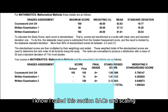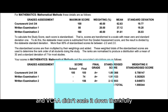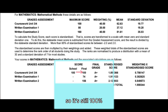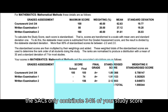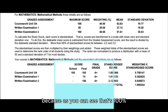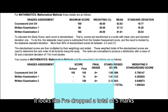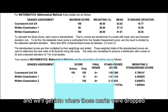I called this section SACs and scaling, but as you can see here, there wasn't actually any scaling because my school submitted my SAC average as 100% and VCAA didn't scale it down, thankfully, so it's still 100%. As you will know, in Maths Methods and Further, the SACs only contribute 34% of your study score, but I think my SACs probably carried me even if they don't contribute that much — that's 100%, whereas with my exams, it looks like I've dropped a total of five marks across the two exams.